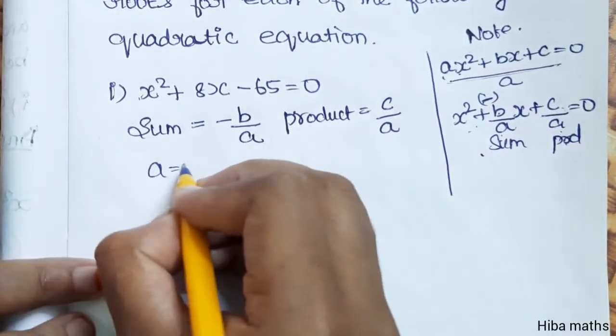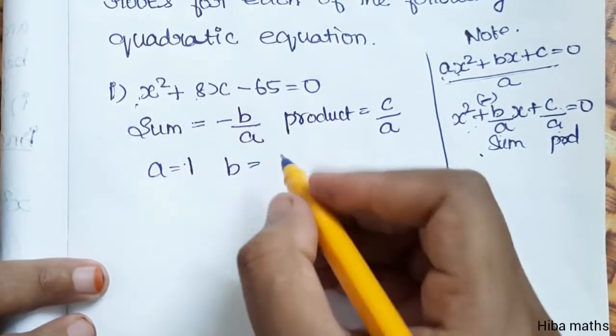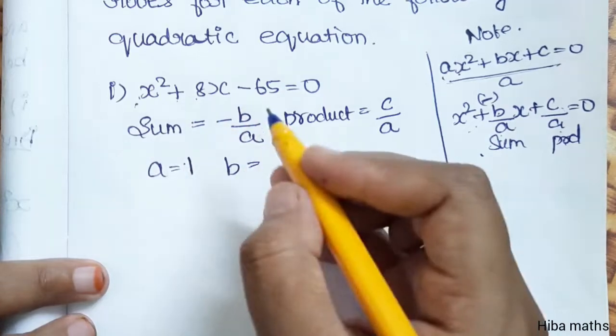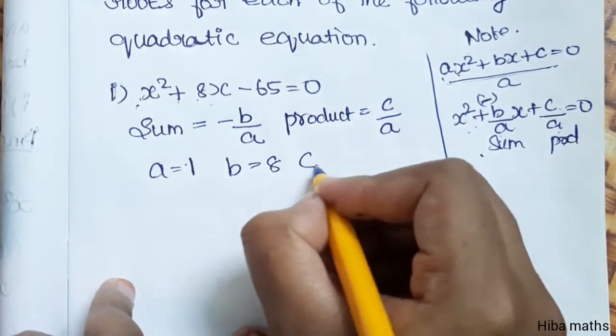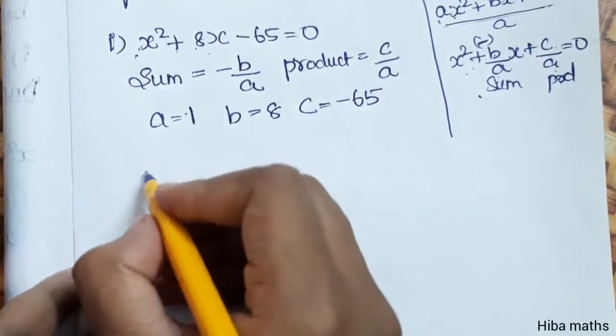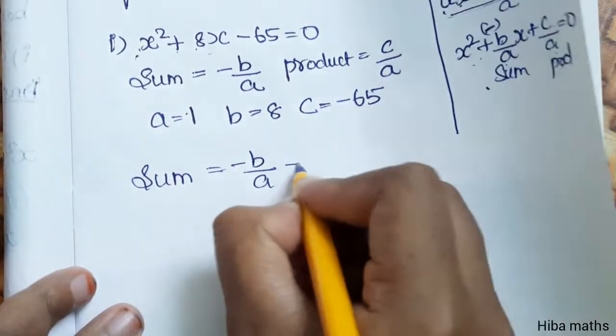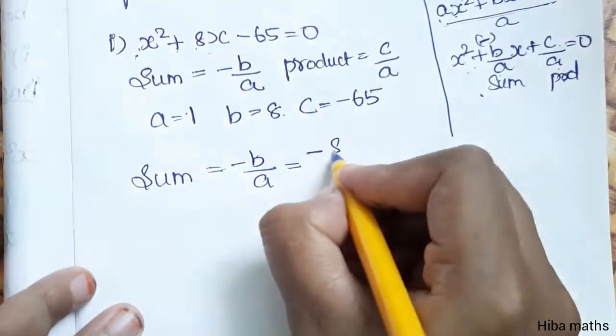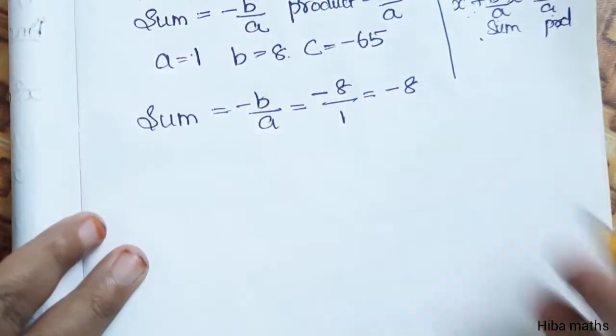First equation: x square plus 8 x minus 65 is equal to 0. Here a is equal to 1, b is equal to 8, and c is equal to minus 65. Now sum is equal to minus b by a, that is minus 8 by 1, which is minus 8.